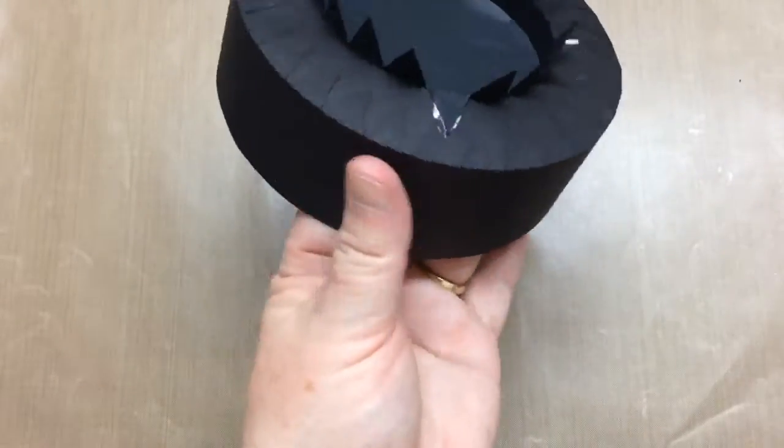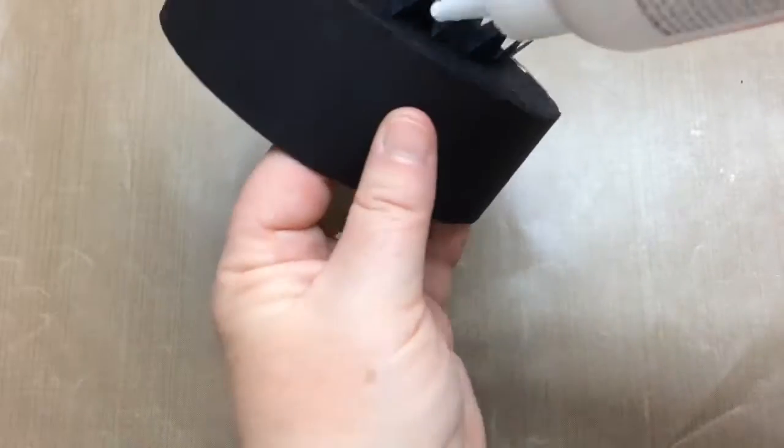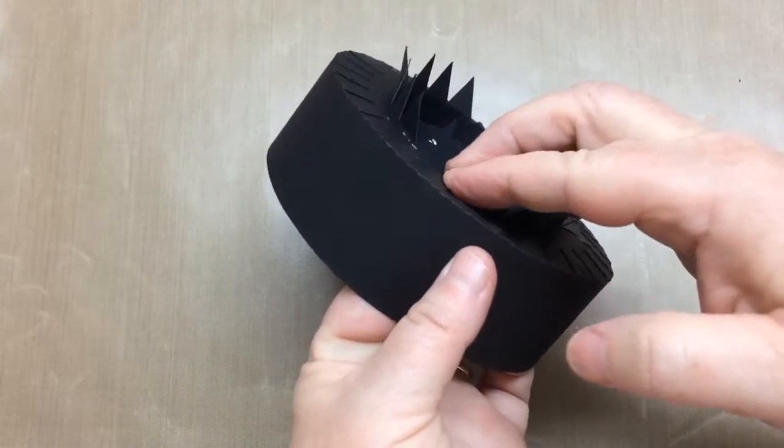So once those are in place, it'll help to glue the remaining tabs in place around the edge of the inside of the lid.